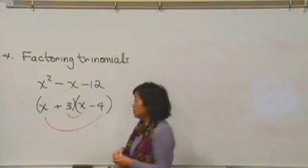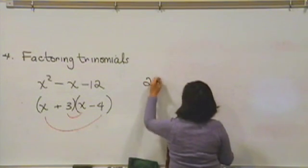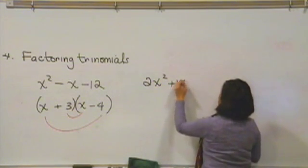Sometimes they get a little bit harder. So for example, what if I wanted to factor 2x squared plus 15x plus 18?